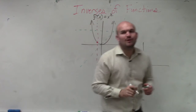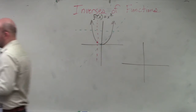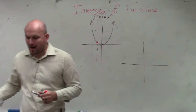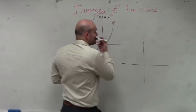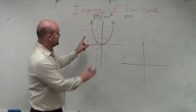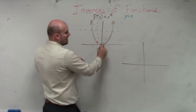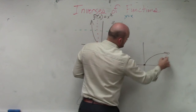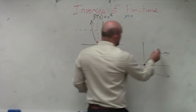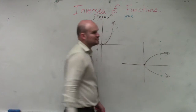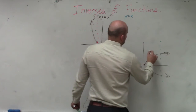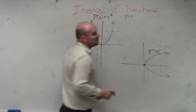So to graph the inverse — just as a quick review — you need to reflect about the y equals x line. That blue line is the y equals x line. So if I was going to reflect this about the y equals x line, that's what the graph would look like. And that horizontal line test, when reflected, now turns into the vertical line test.